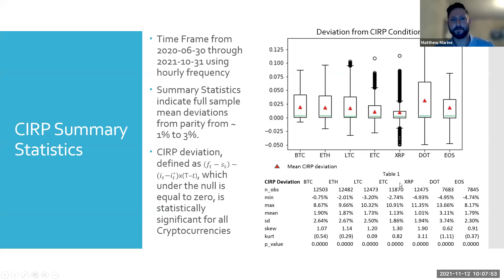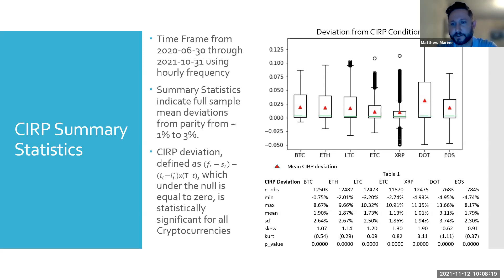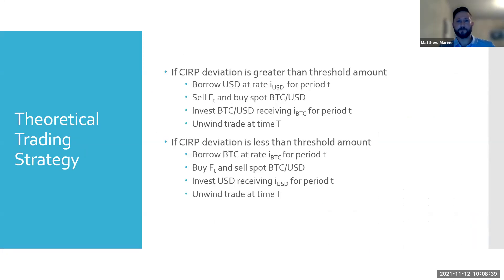This is a summary statistics slide covering seven currency pairs, showing that yes, in this period there's definitely some statistical difference. One thing to consider: round-trip transaction costs are around 30 basis points for this trade. So when you look at most of the data — the one to three percent deviations — much of it is on that right side which becomes basically unusable, because it's not something you can really take advantage of in the real world.